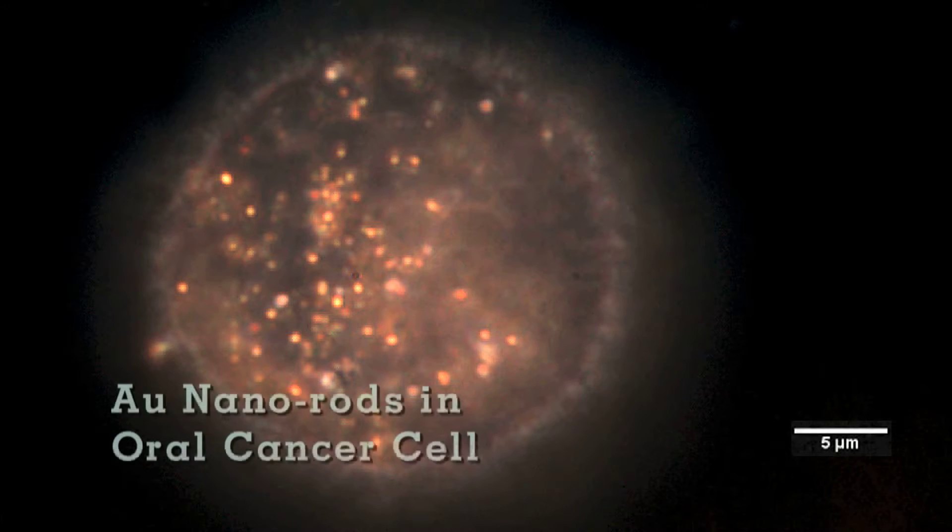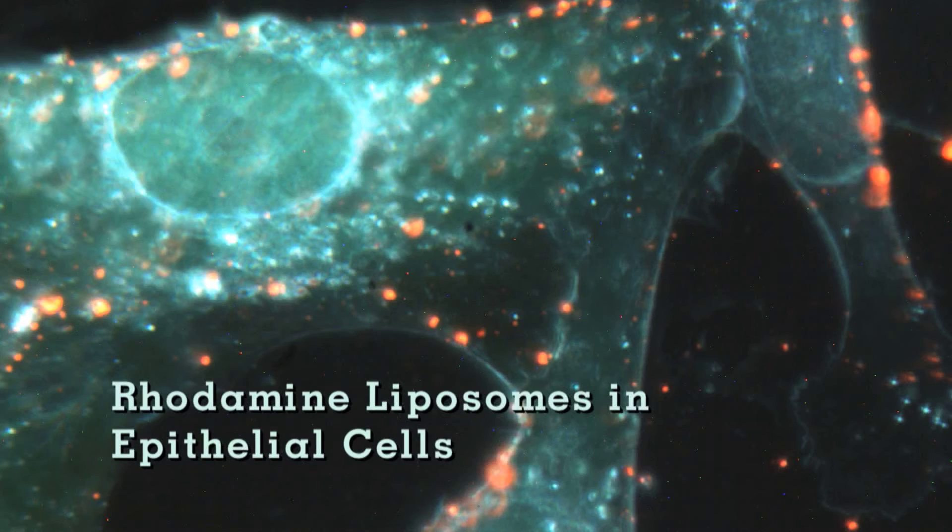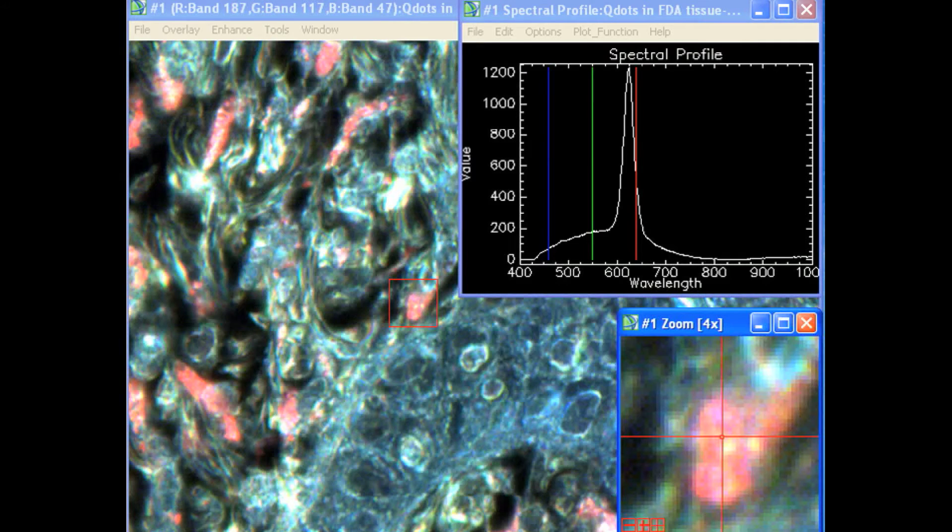Integrating hyperspectral imaging with the CytoViva-equipped microscope enables spectral characterization of nanoscale materials and biologicals. This characterization is accomplished by capturing visible near-infrared reflectance spectrum from the sample at very high spectral resolution.